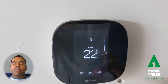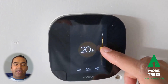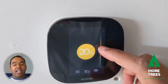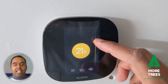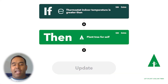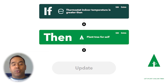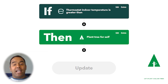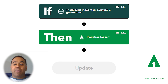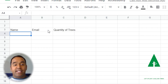I'm going to show you some of the applets that I've created so far to help you plant trees. I think the most intuitive and immediate way to offset your carbon footprint every day is by planting a tree every time you turn your thermostat to a certain temperature to heat or cool your home. You can use IFTTT services like Ecobee as a trigger and then action MoreTrees to plant a tree based on how much energy you use.